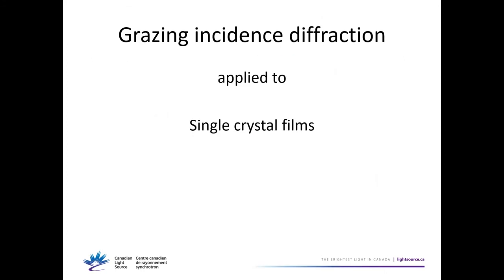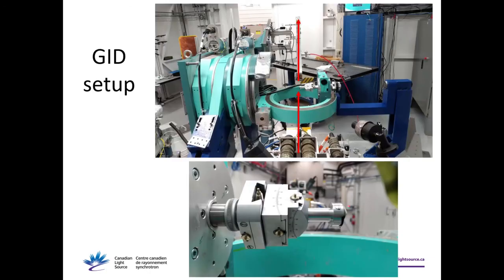So far we saw examples of grazing incidence diffraction applied to polycrystalline zinc films. Now for single crystal films: for single crystals, we take our diffractometer and swap it around so that the sample is sideways. The beam comes this way, the sample goes this way, and the film is on this surface. This geometry selects HKL planes that are all in-plane.